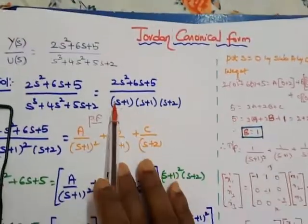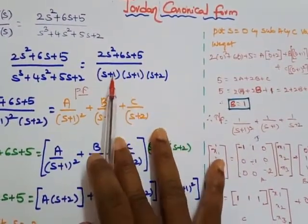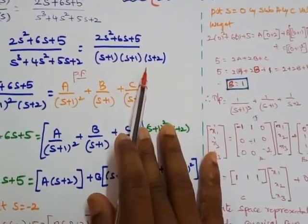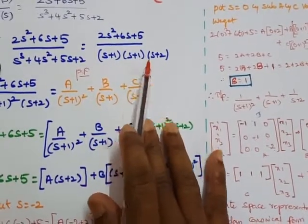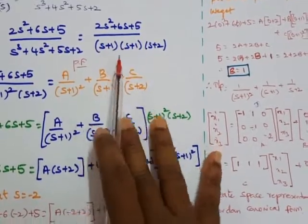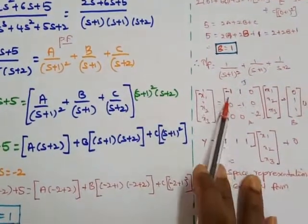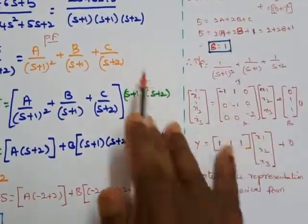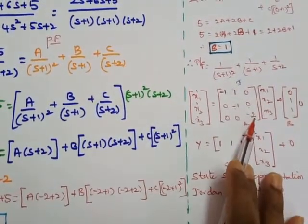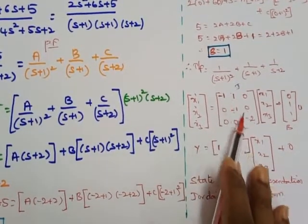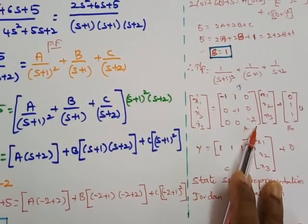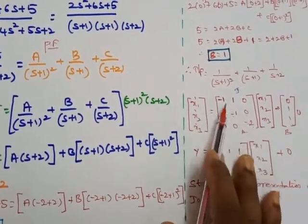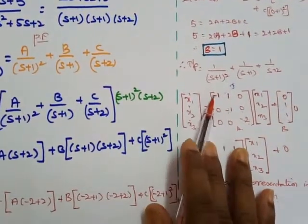The transfer function (2s²+6s+5)/((s+1)(s+1)(s+2)) has denominator values indicating three poles: s = -1, s = -1, and s = -2. These poles must be represented in diagonal form. If poles are not repeated, the result is simply a diagonal canonical form; but if poles are repeated, the resulting matrix is called a Jordan canonical form.